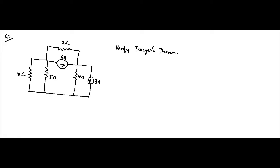Here we are again with another question on Tellegen's theorem. We have to verify Tellegen's theorem for this circuit. We have to find out the branch currents, then find out which circuit elements are absorbing power and which are supplying power, then find the net power for this circuit. First, we have to redraw the circuit.